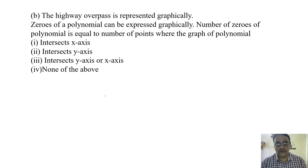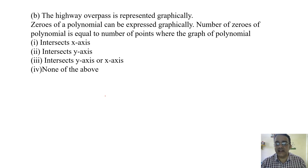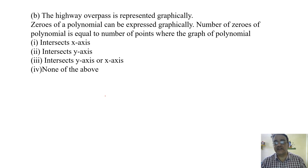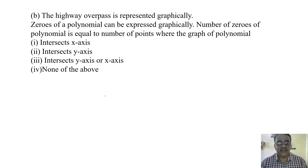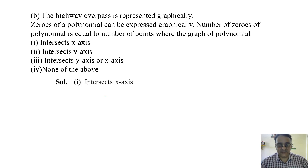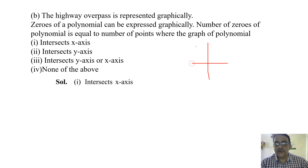The highway overpass is represented graphically. Zeros of a polynomial can be expressed graphically. The number of zeros of a polynomial equals the number of points where the graph intersects the x-axis.